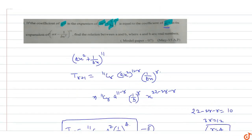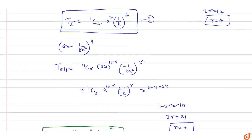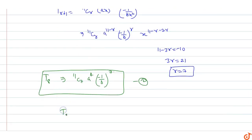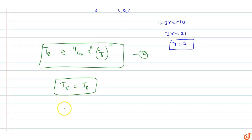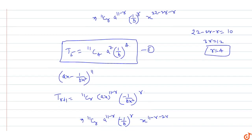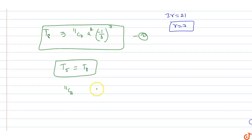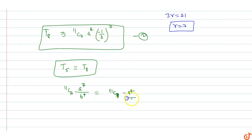Equation first and equation second represent the same thing — we are given that both coefficients are equal. So T5 (first expansion) = T8 (second expansion): 11C4 · a^7 / b^4 = 11C7 · a^4 · (-1) / b^7.